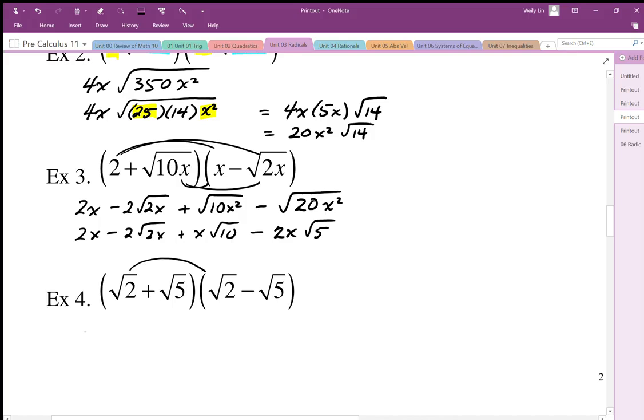So when we distribute this, we get root 2 times root 2, which is 2, minus root 2 times 5 is root 10, plus root 5 times root 2 is root 10. These will cancel out.